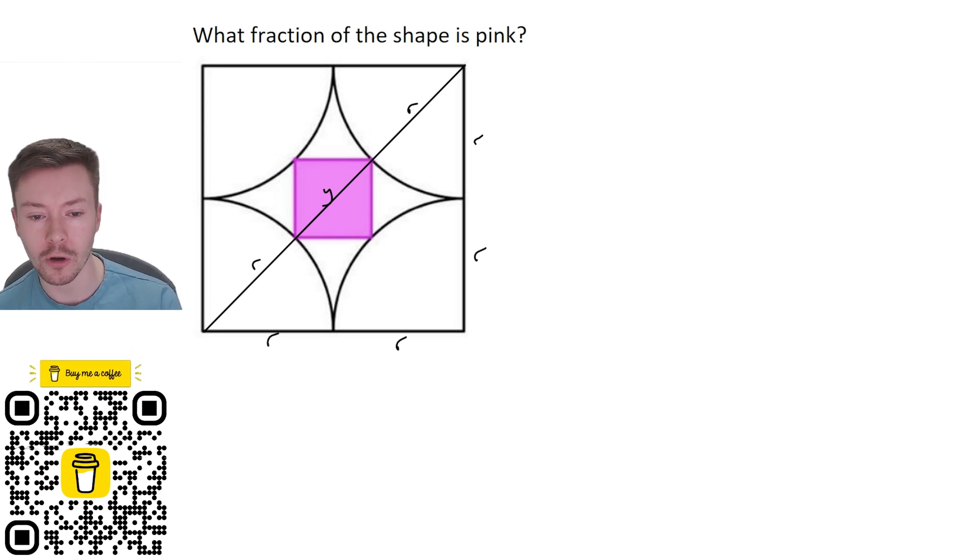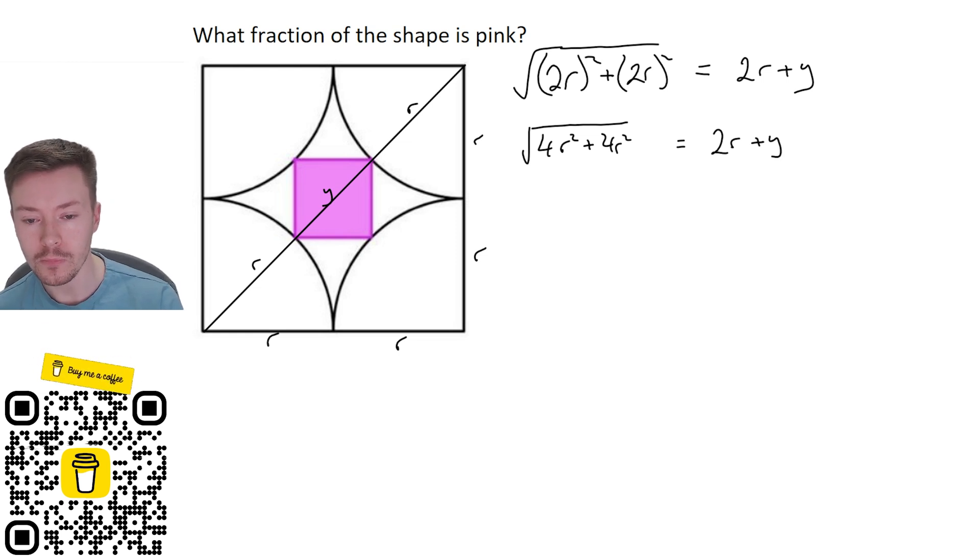So what I'm going to do is I've got 2r squared add 2r squared, the outside square here, and then if I square root that, that has to give me 2r plus y. That is my diagonal. And so what I get then is I get the square root of 2r squared, well that's going to be 4r squared plus 4r squared is equal to 2r plus y. That gives me the square root of 8r squared.